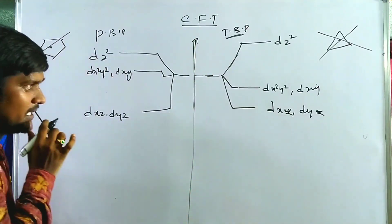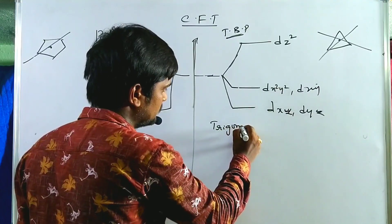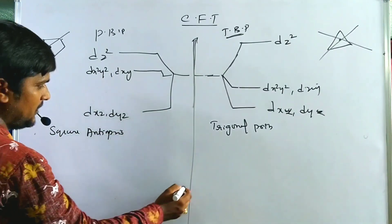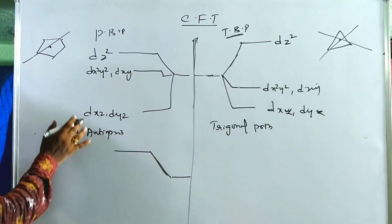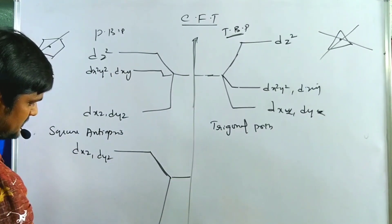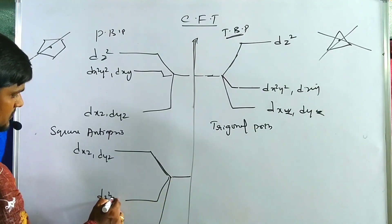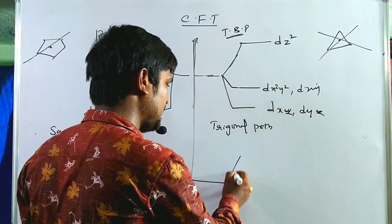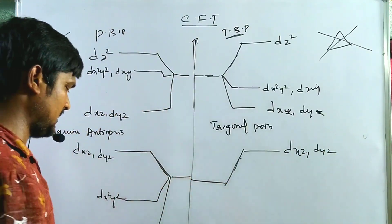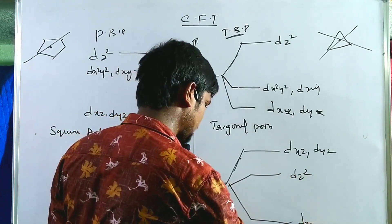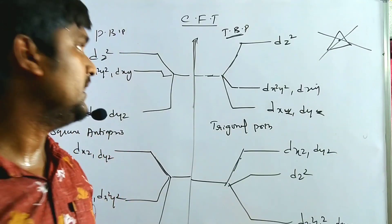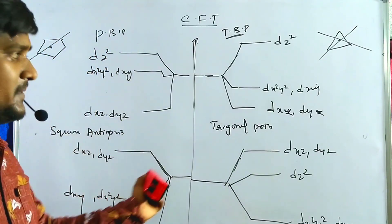For trigonal prism and square antiprism geometries: in square antiprism, which is quite opposite to pentagonal bipyramidal, dxz and dyz are at the top, followed by dz², then dx²−y², and dxy at the bottom. In trigonal prism, dxz and dyz are also at the top, but dz² and dx²−y², dxy are arranged differently from the square antiprism. These are the crystal field splitting patterns for trigonal bipyramidal, pentagonal bipyramidal, square antiprism, and trigonal antiprism geometries. Thank you for watching.